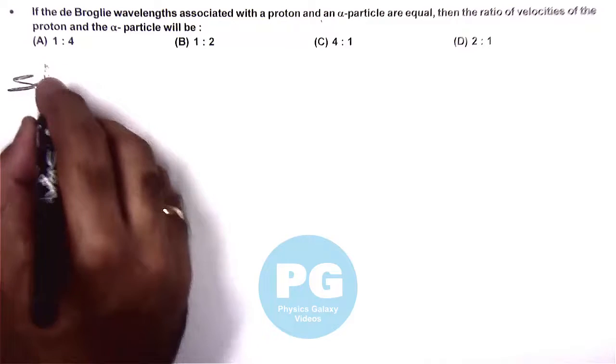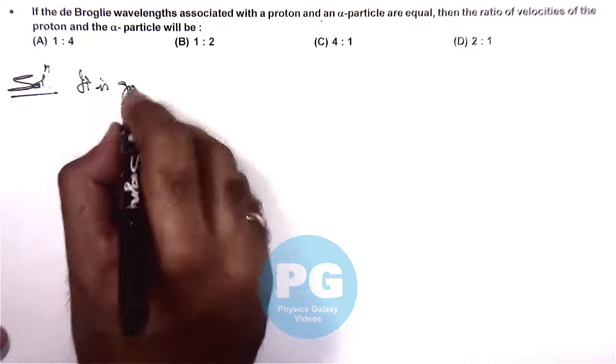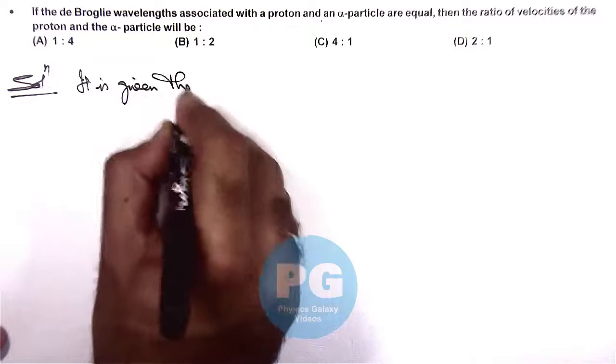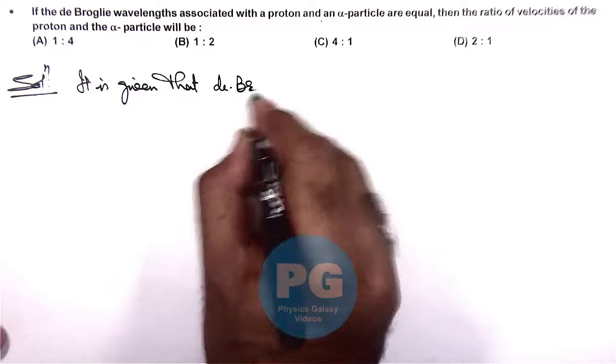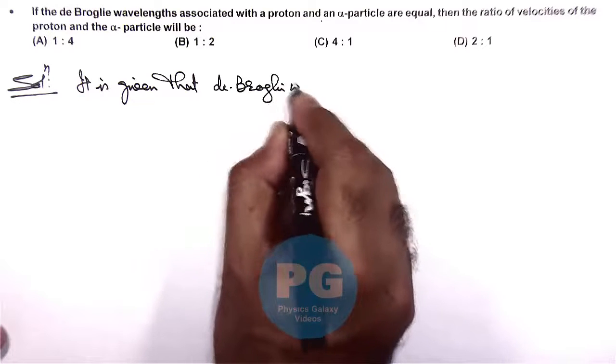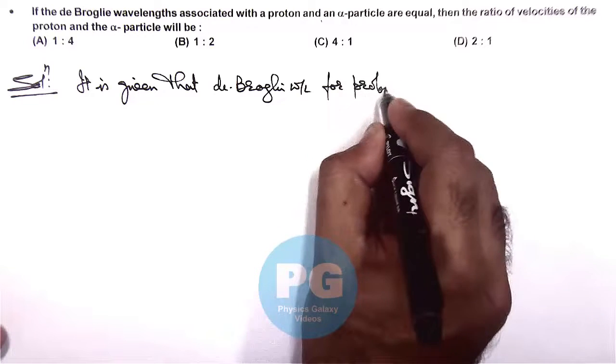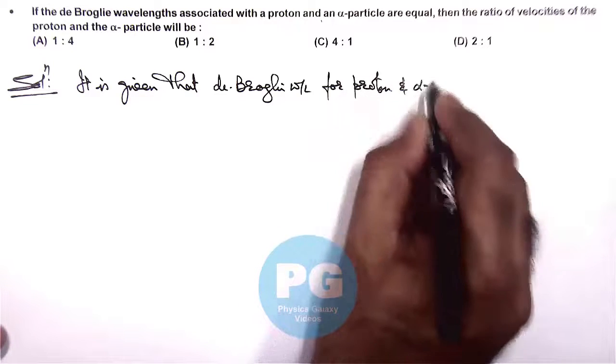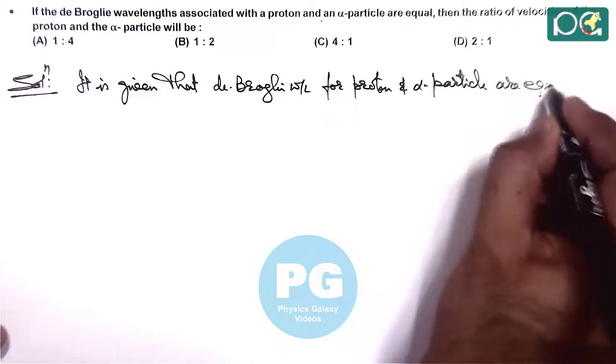So here directly we can write: it is given that de Broglie wavelengths for proton and alpha particle are equal.